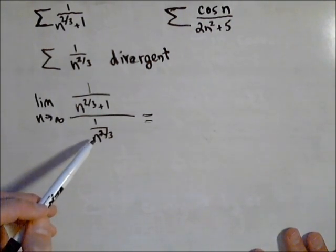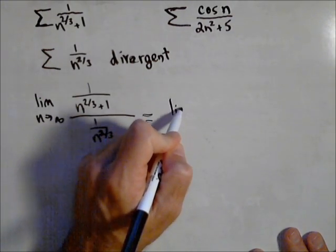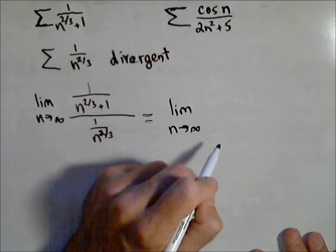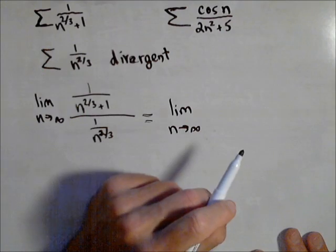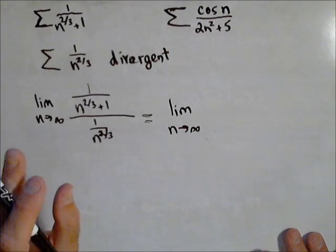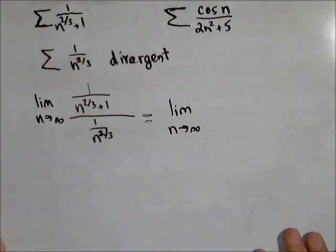Notice in the denominator, dividing by a fraction means I can flip it and multiply. Now, the thing about the limit comparison test, we are no longer concerned about the series. We are just focused on this limit. All we have to do is calculate it, any limit calculating methods we have.